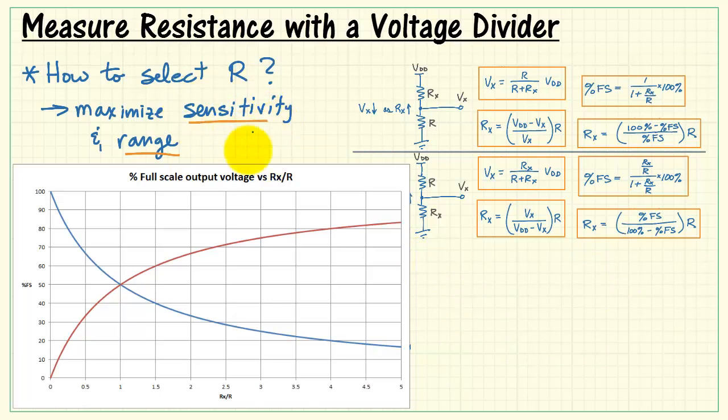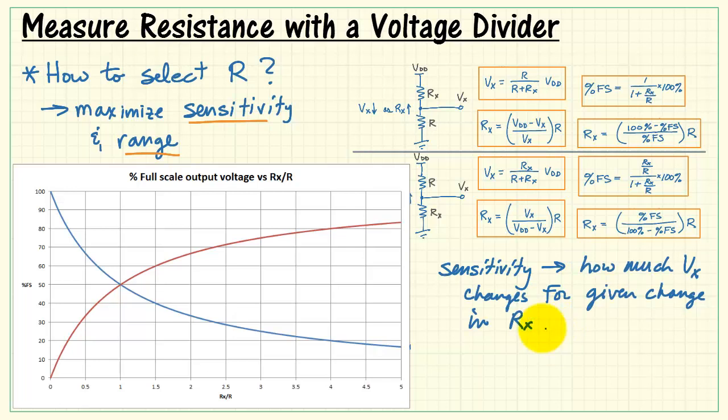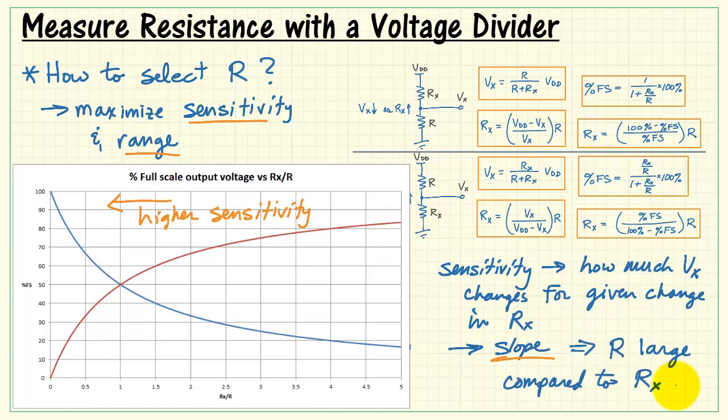Let's look at the sensitivity issue first. When we say measurement sensitivity, it really means how much change in Vx do we get for a given change in Rx. Clearly from this graph, we see that we get large changes on the left side, but small changes on the right side. It really relates to the slope of these curves. We're looking for higher slope to indicate higher sensitivity. So in this region where we choose Rx to be relatively low compared to R, we have higher sensitivity. Highest sensitivity is obtained whenever R is large compared to Rx.